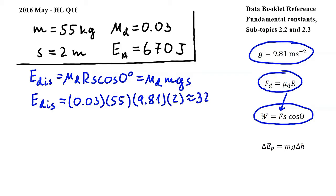This gives us approximately 32.4 joules for the energy dissipated between point A and B. Next, let's find EB, the energy of the block at B. This is equal to the energy at A, so EA minus the energy dissipated, so Edis. EA was given to be 670 joules in question part A1 minus Edis, which is 32.4 joules. This is equal to 637.6 joules, so this is the kinetic energy of the block when it reaches point B.